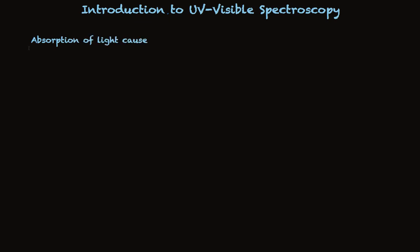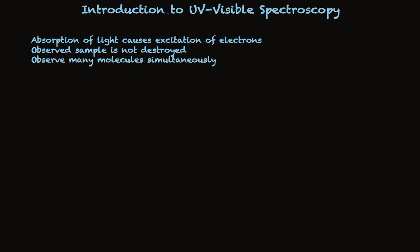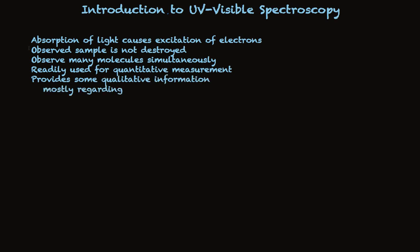UV visible spectroscopy is widely used today because it lends itself to quantitative measurement and is highly sensitive, so many quantitative measurements of organic compounds rely on UV visible spectroscopy. Here is a summary of the key facts about UV-Vis: absorption of light causes excitation of electrons; the observed sample is not destroyed; you observe many molecules at once; its primary use is quantitative measurement; and it provides some qualitative information, mostly regarding conjugated pi systems.